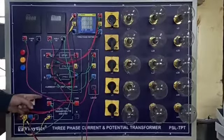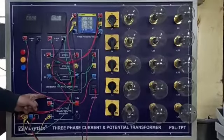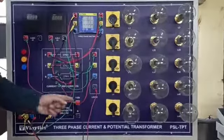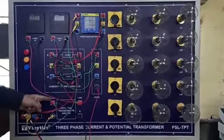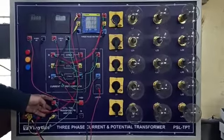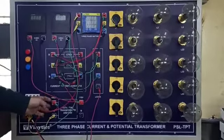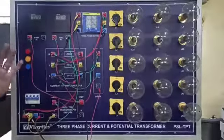This potential transformer has a ratio of 1 is to 4. That is 440 volt input, 110 output. Basically what it does is, any voltage that you will give here, it will give divided by 4 here.